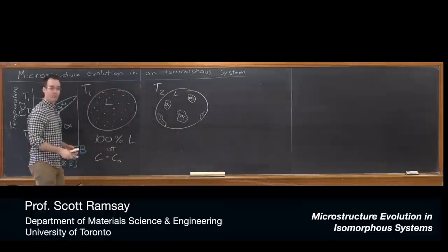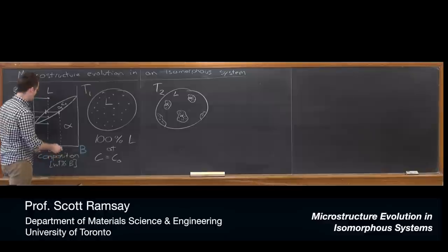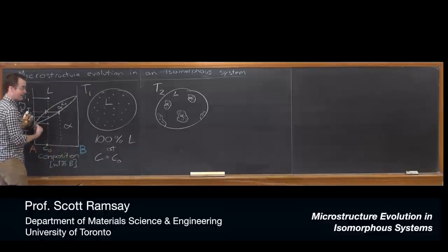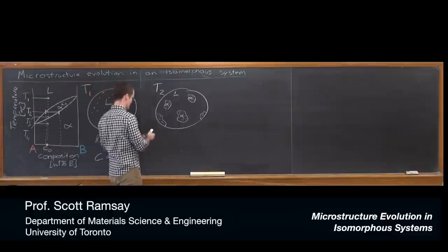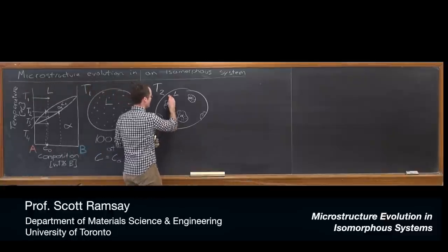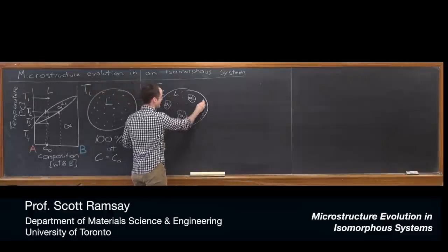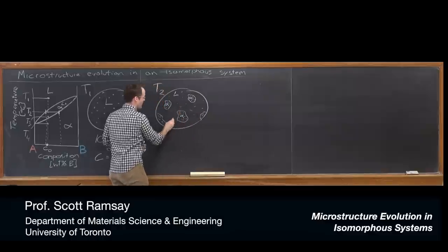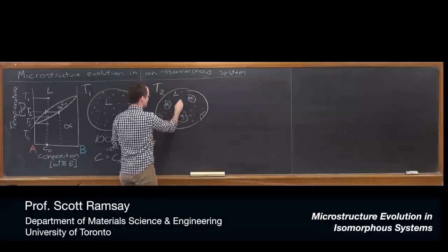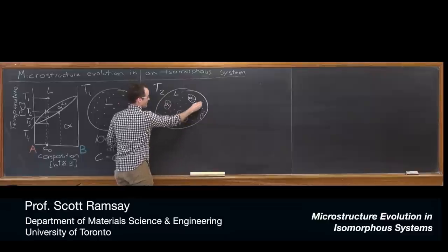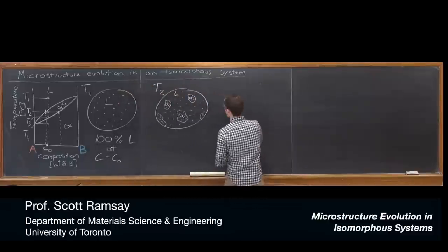The liquid is actually depleted in B. It's got more A. You can see the composition of the liquidus there is towards the A side. So, in fact, in the remaining liquid, there are more A atoms and, relatively speaking, fewer B atoms.